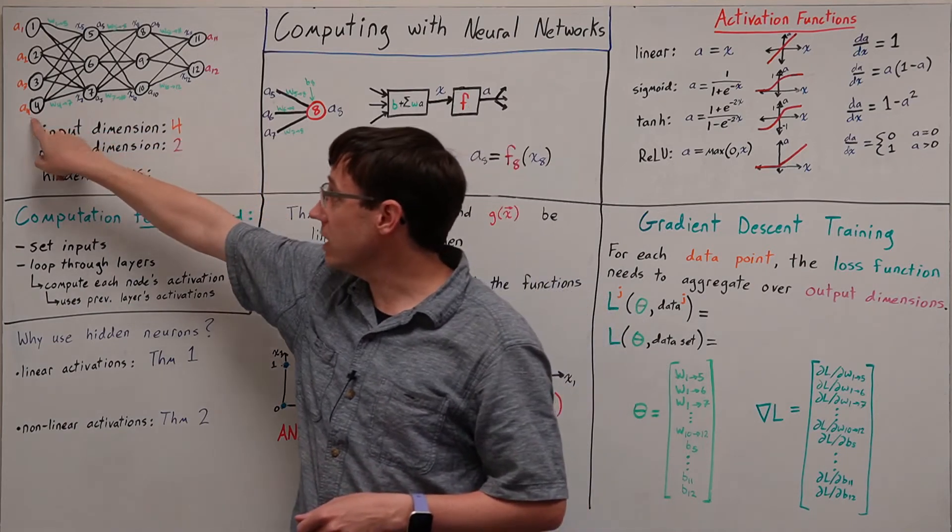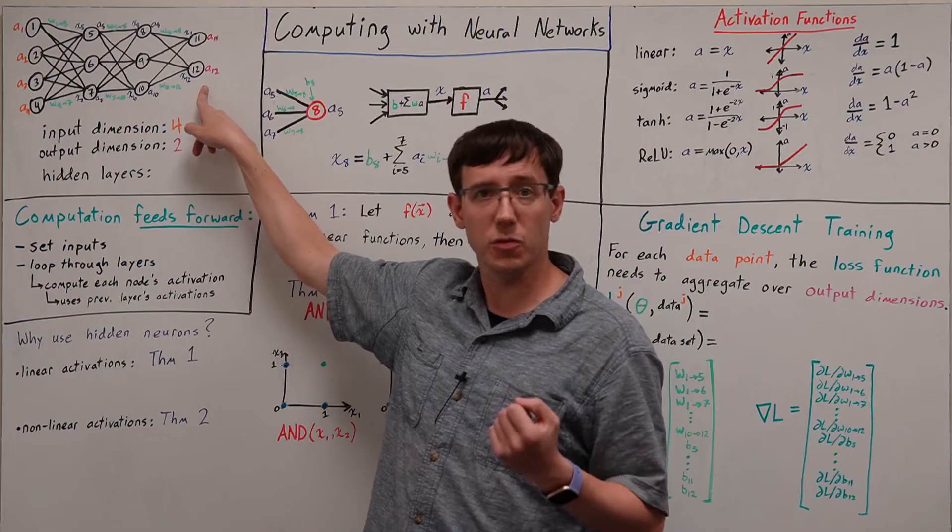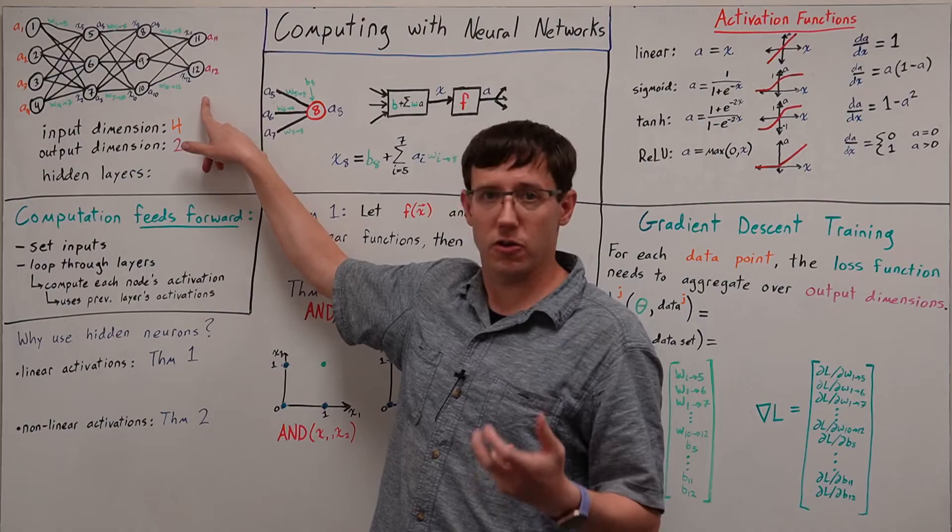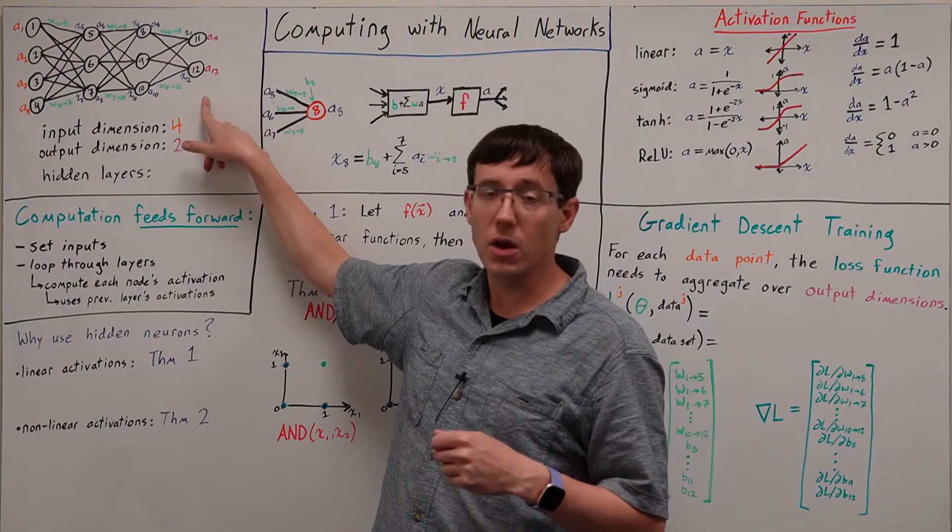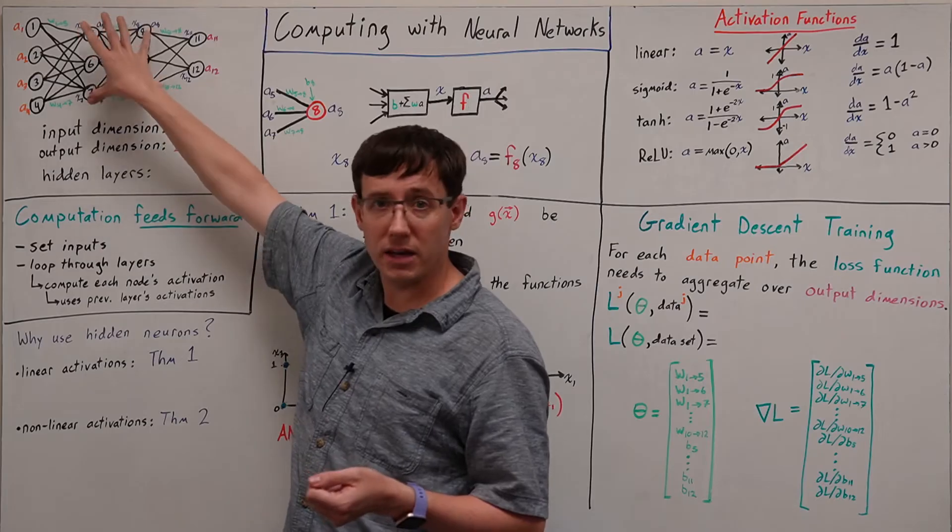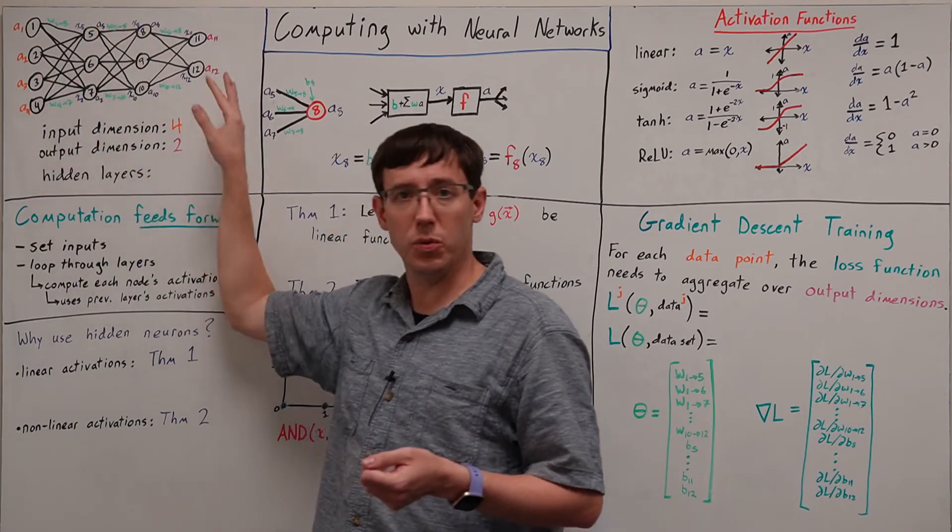So the size of the input and output layers are part of our hypothesis space specification. But as we'll see, the complexity of function that the network can represent will depend on the number and connectivity of nodes and layers between the inputs and outputs.